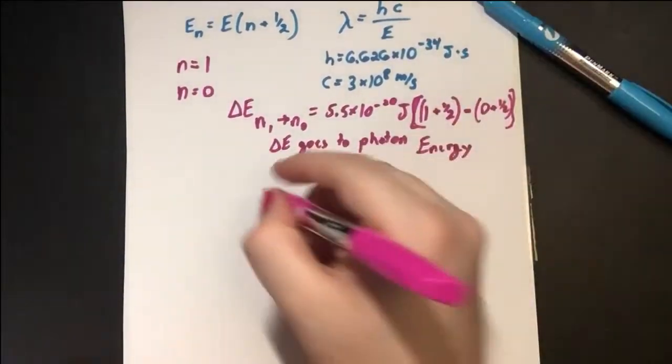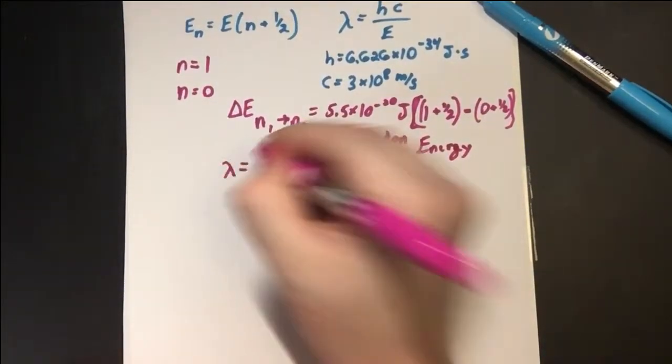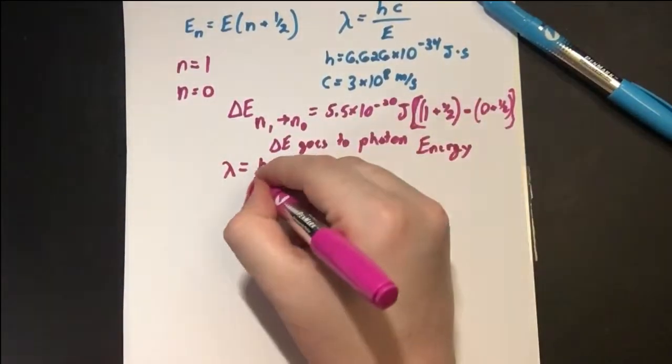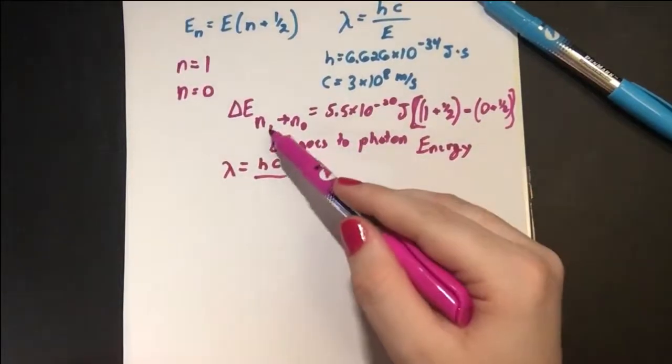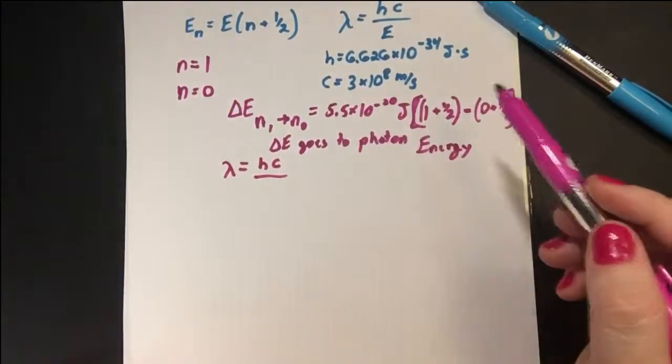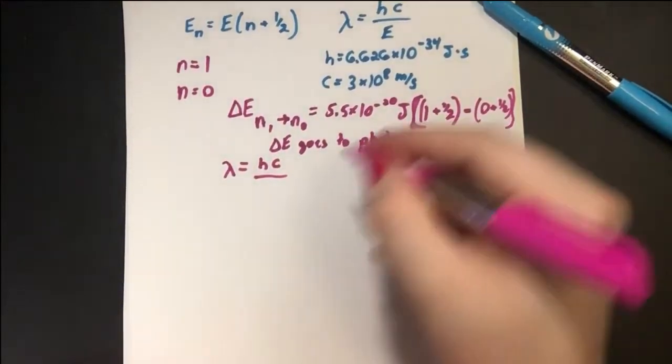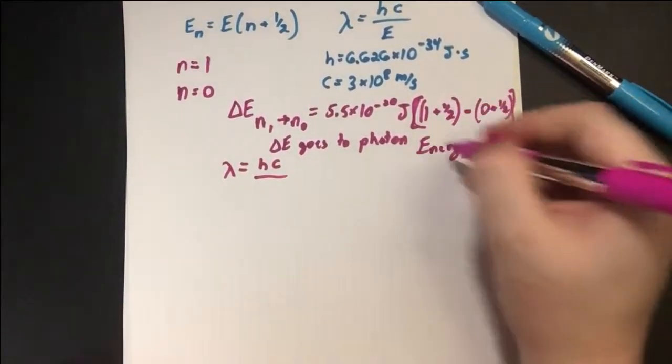Okay? So our energy we want to use for solving for the wavelength, we have our two constants h and c, which I wrote up here, divided by this change of energy from the first excited state to the ground state, which is just 5.5 × 10⁻²⁰, times this, which is just 1.